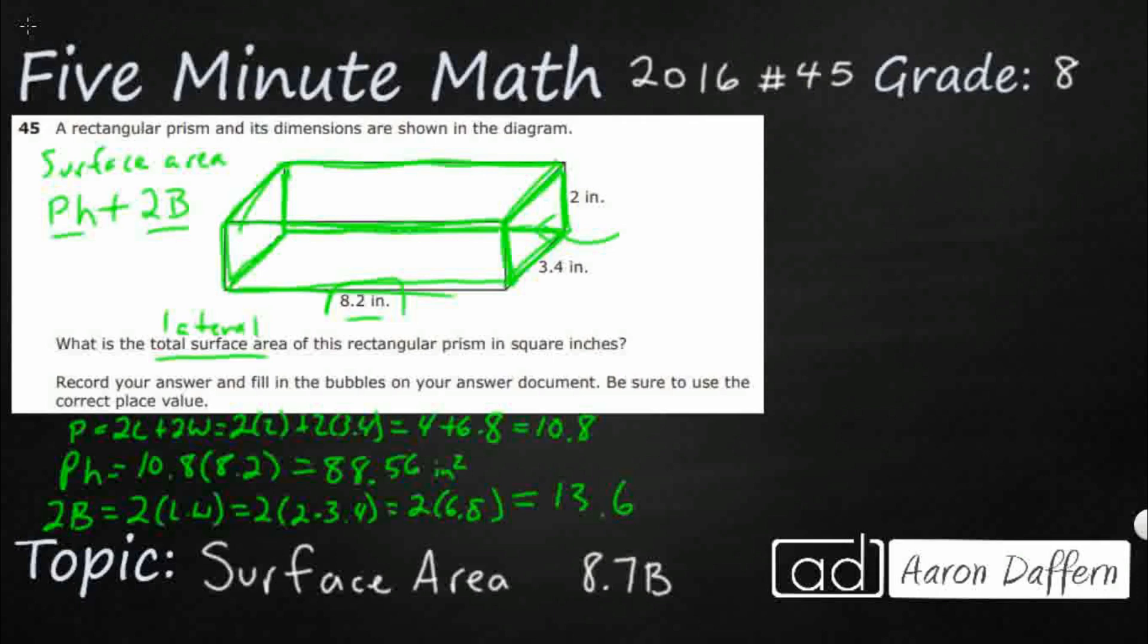Now I've got these two. I just need to add up 13.6 plus 88.56. I'm going to get 102.16. You have to add these two up right there.